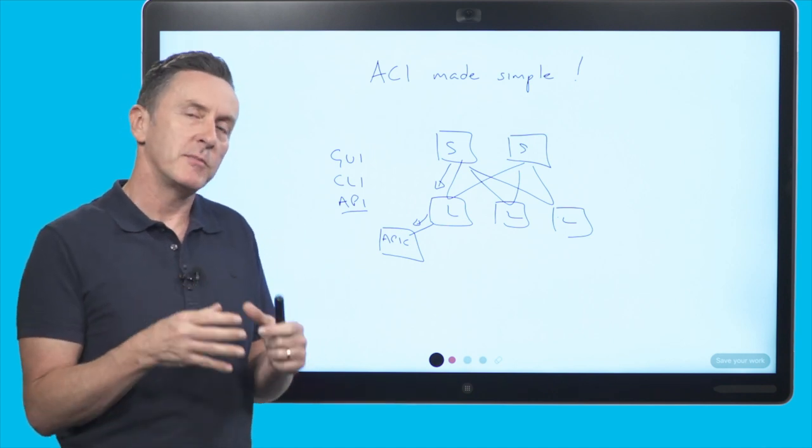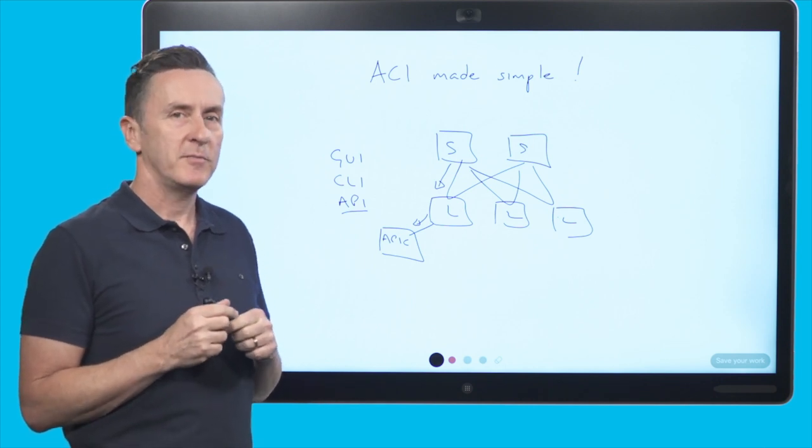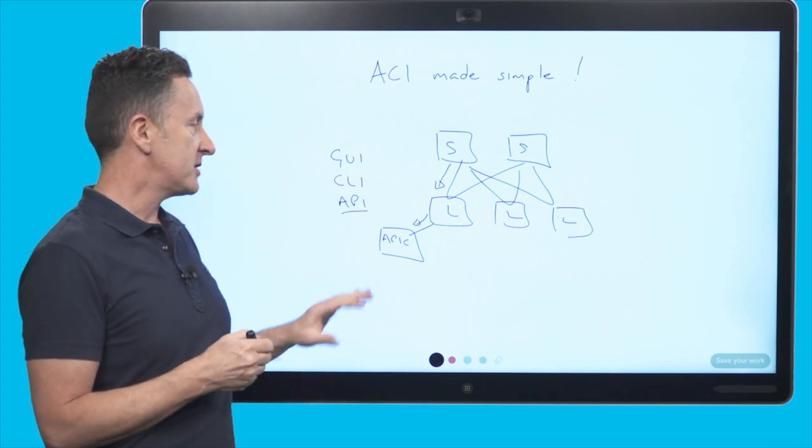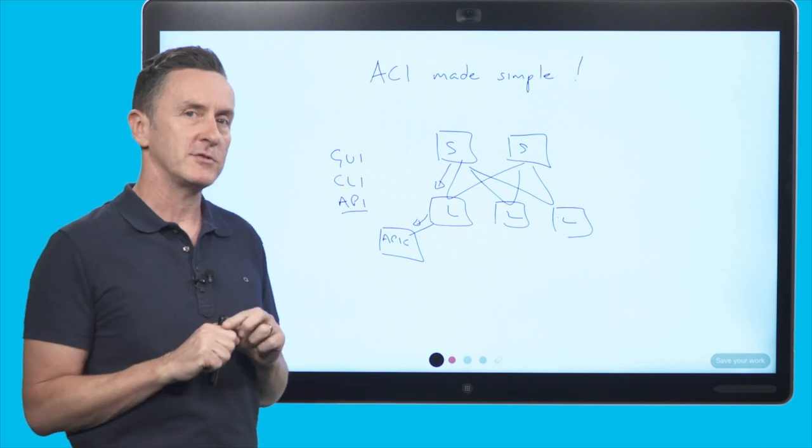That was great for the help desk but for this customer an even bigger benefit was for auditing. Because they're a financial they're audited continually and so now they could actually go to APIC and pull out the running config for all of their different applications across the network.